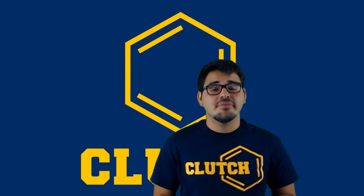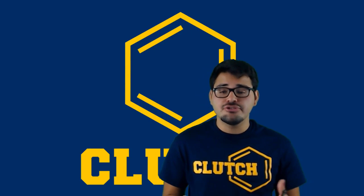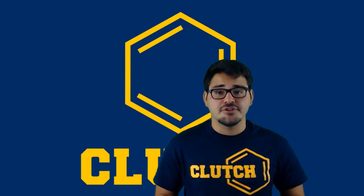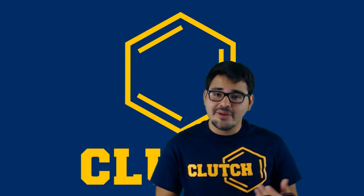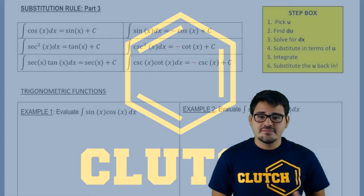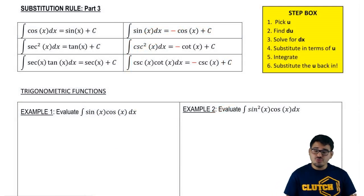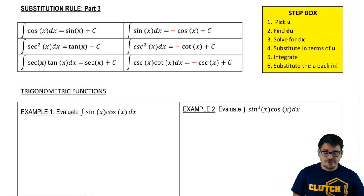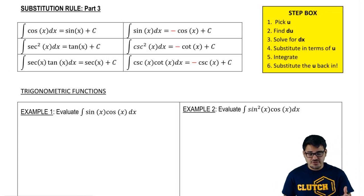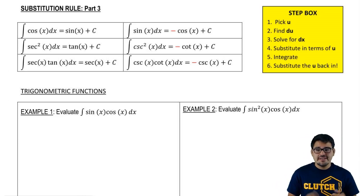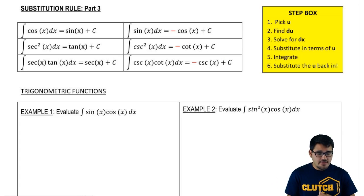In this video, we're going to see how we apply u-substitution when it comes to trigonometric functions. I've started off by giving you the rules of trigonometric functions for sine, cosine, secant squared, cosecant squared, secant tangent, and cosecant cotangent.